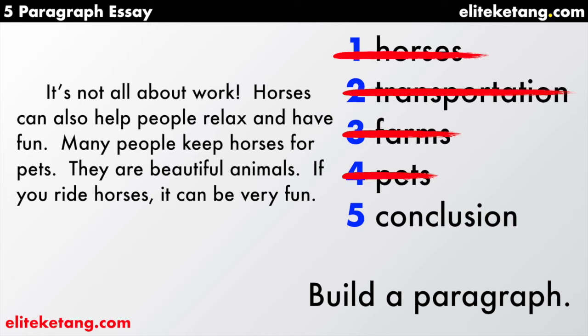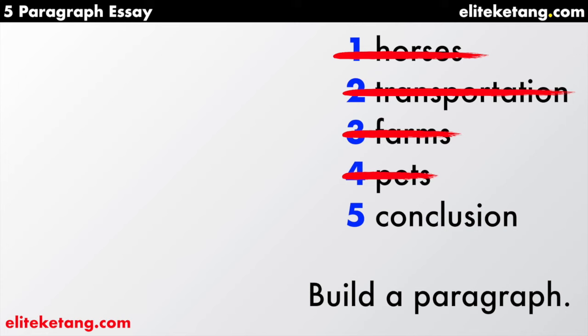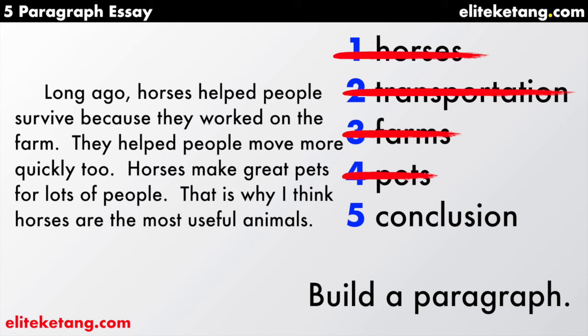Now our reasons two, three, and four are finished. Let's move on to the last paragraph — the conclusion. In the conclusion, we're going to go back and talk about everything one more time. 'Long ago, horses helped people survive because they worked on the farm. They helped people move more quickly, too. Horses make great pets for lots of people. That is why I think horses are the most useful animals.' I went back and took something from paragraphs two, three, and four and put that in one conclusion at the end. The conclusion is finished.